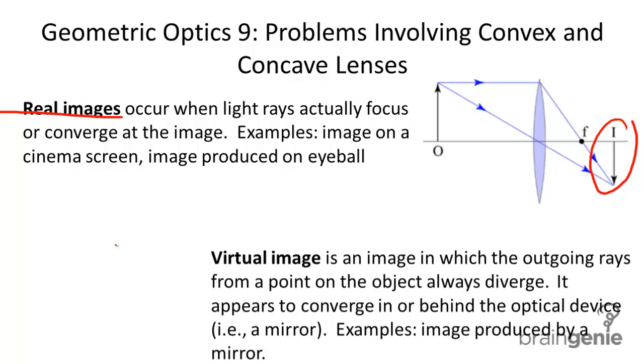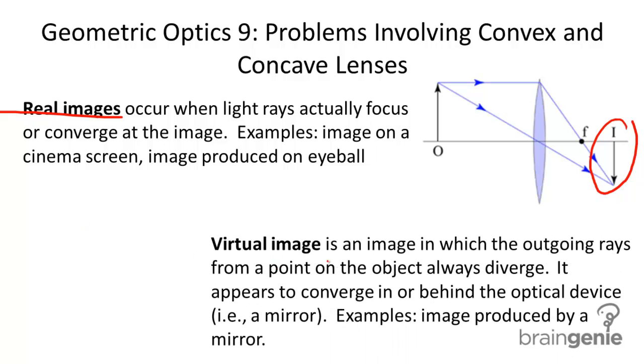Contrasting real images, the opposite is a virtual image. A virtual image is an image in which the outgoing rays from a point on the object always diverge. It appears to converge in or behind the optical device.